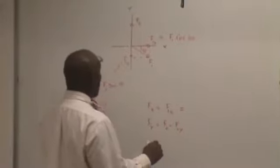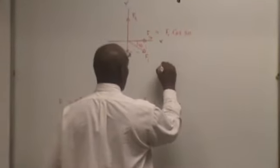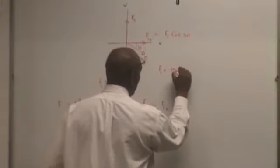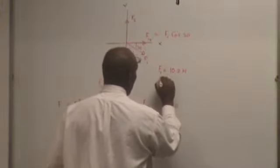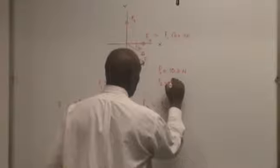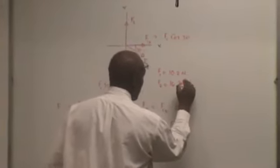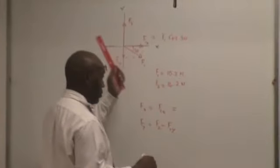They gave me some number for F1. I don't even know, what is F1? 10.2 Newton. And F2 is what? 16.2. And the angle is 30 degrees. That's all I need to know, I don't need anything else.